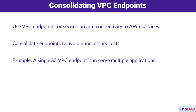Next, let's talk about VPC endpoints. These endpoints provide secure, private connectivity to AWS services, but costs can add up if not managed carefully. Consolidating endpoints can help. For example, a single S3 VPC endpoint can serve multiple applications, streamlining your architecture and reducing expenses.